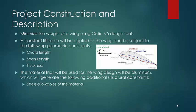The project construction and description, as we mentioned before, is to minimize the weight of a wing using CATIA V5 tools. We will have specific airfoil designs that we will implement to the program, and these wings will be subject to the geometric constraints of chord length, span length, and thickness.